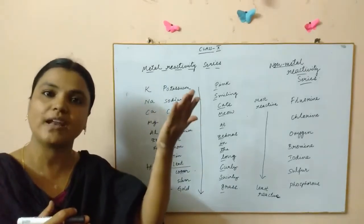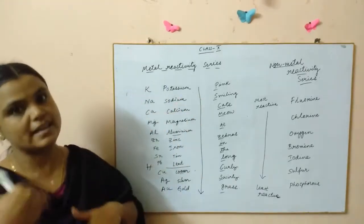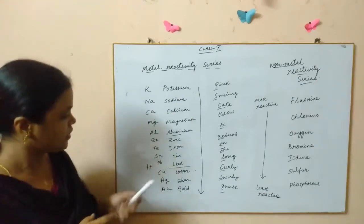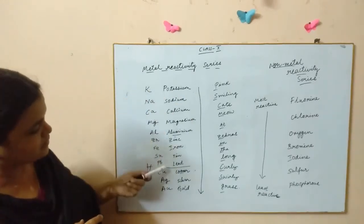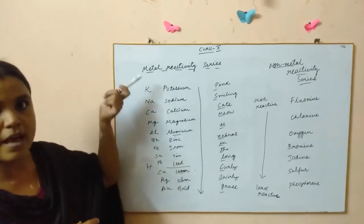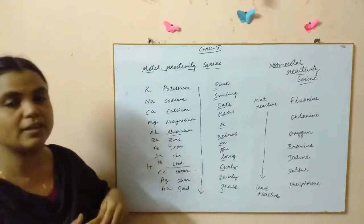We take hydrogen as a reference element and we can classify these metals into two categories: metals which are more reactive than hydrogen and metals which are lesser reactive than hydrogen.